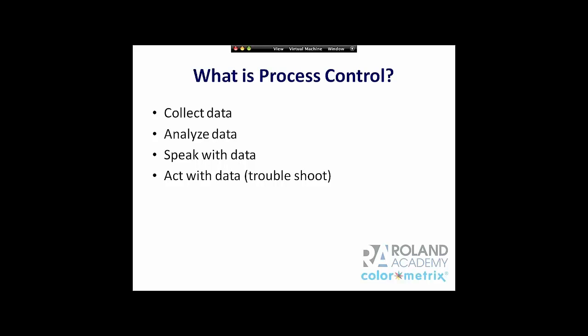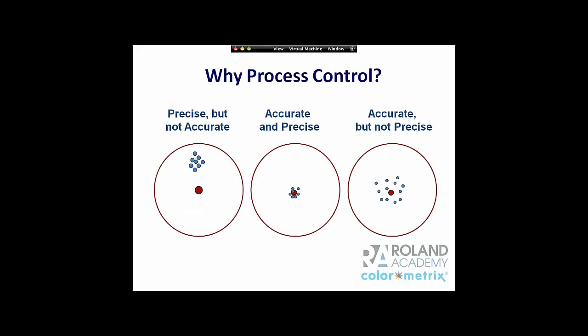So what is process control? It's the collection of data — in our case, we're going to be collecting color data. It's an analysis of that data, because once you analyze the data, you have the ability to speak with data. So instead of pointing fingers and saying that image is too warm or too red, we actually say that image is too red by a specific delta E value. We start to use numbers and attach actual facts to subjective feelings. And then the last piece is acting on that data, which gets into the troubleshooting aspect.